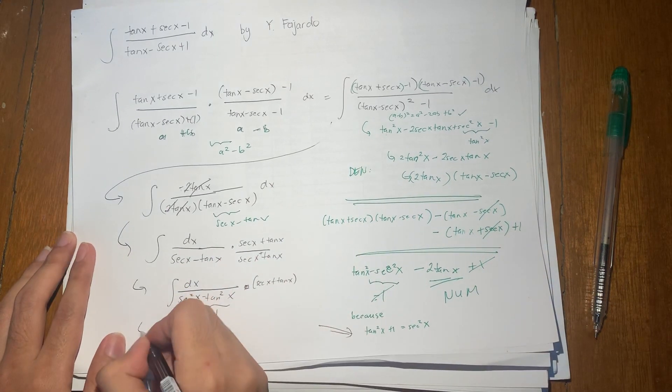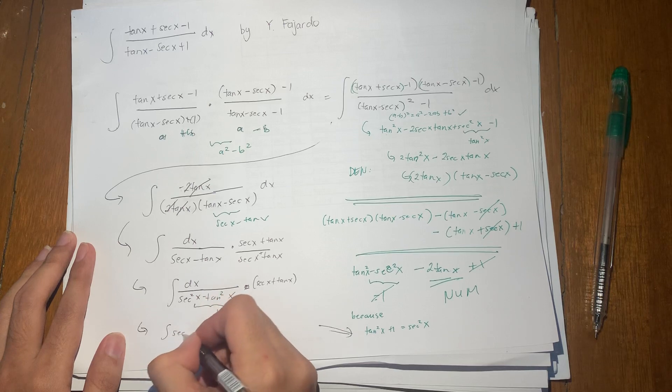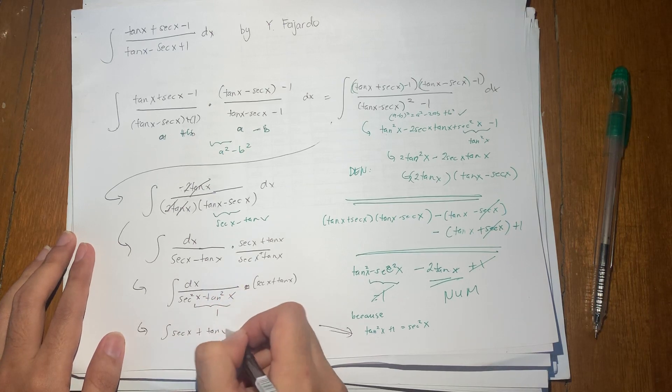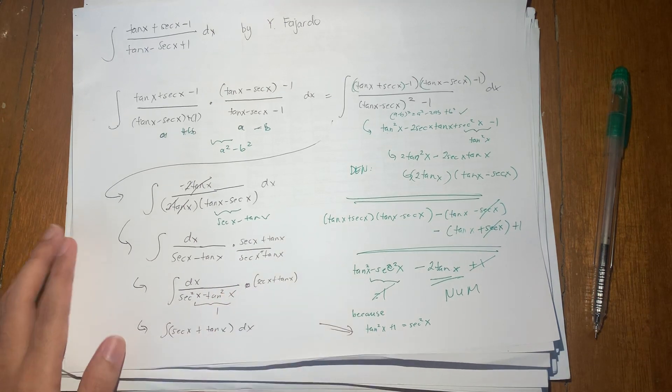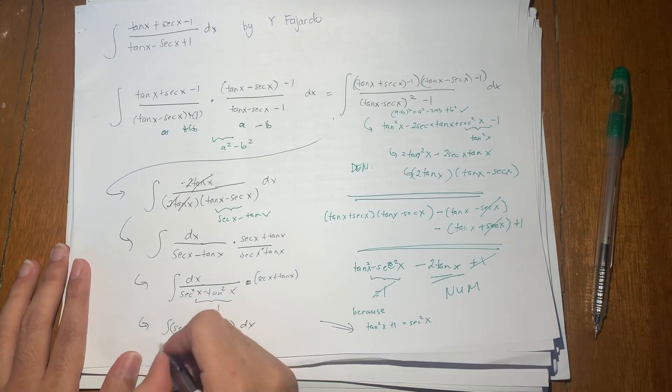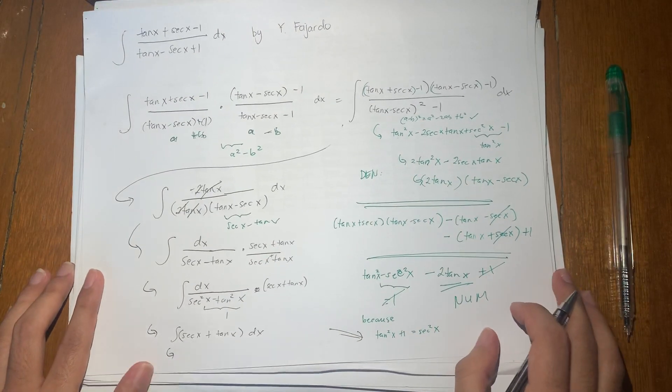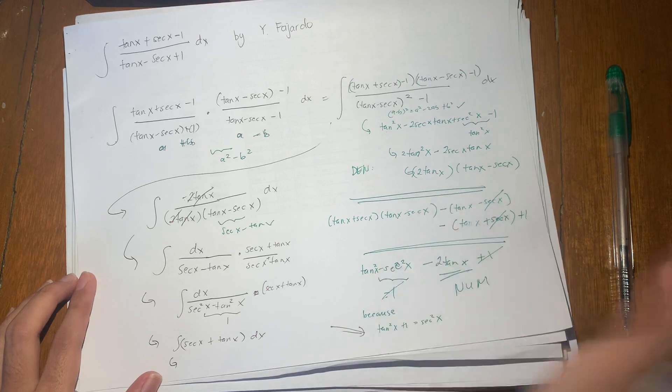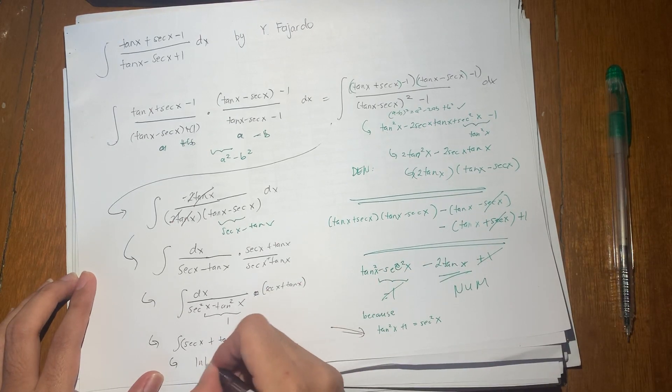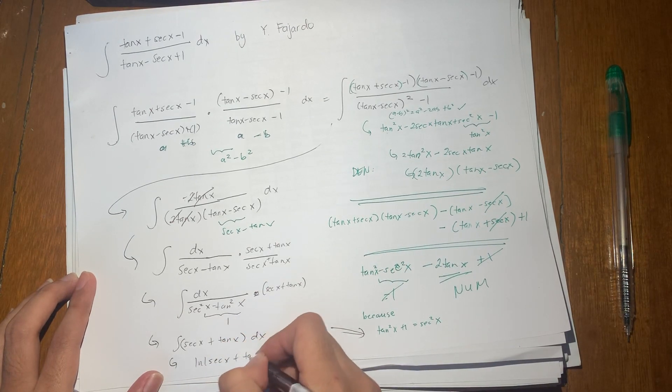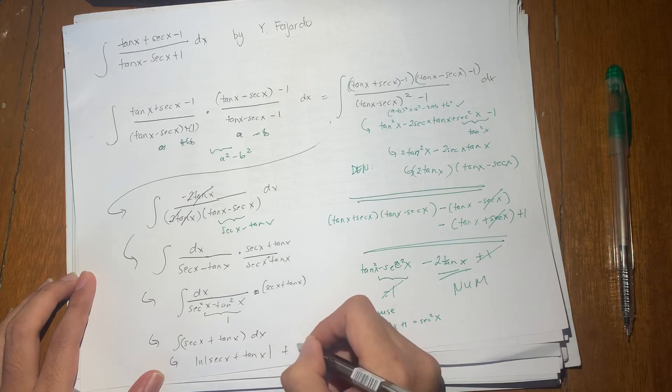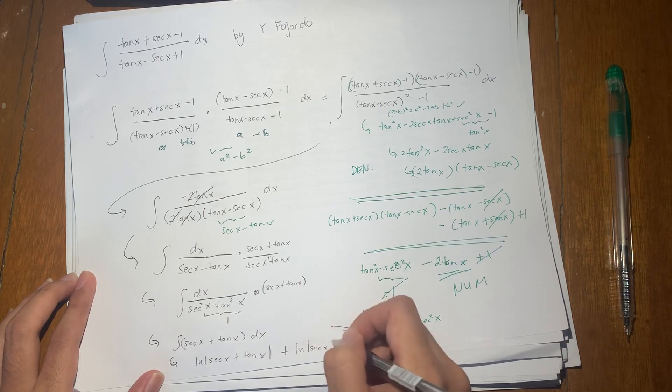So we are left with integral of secant x plus tangent x dx. Now these two, we know already from our early derivatives, anti-derivatives class. So this one is ln of secant x plus tangent x plus ln of secant x plus c.